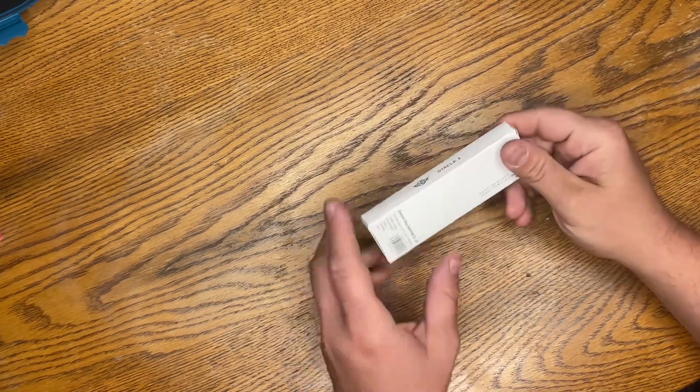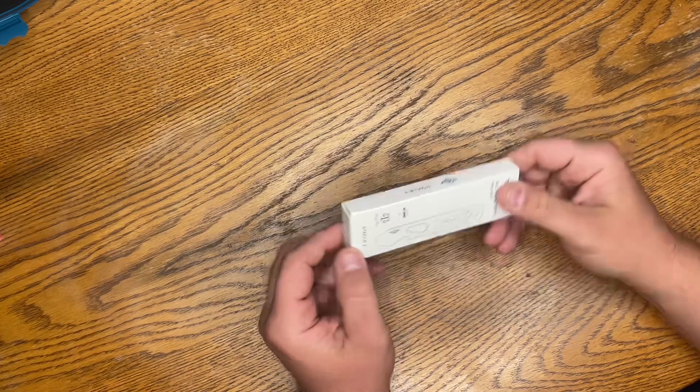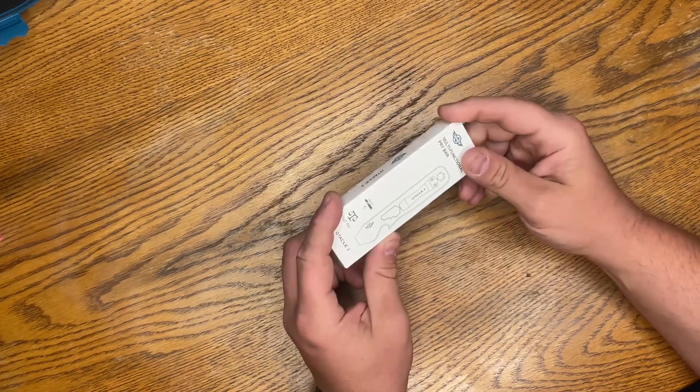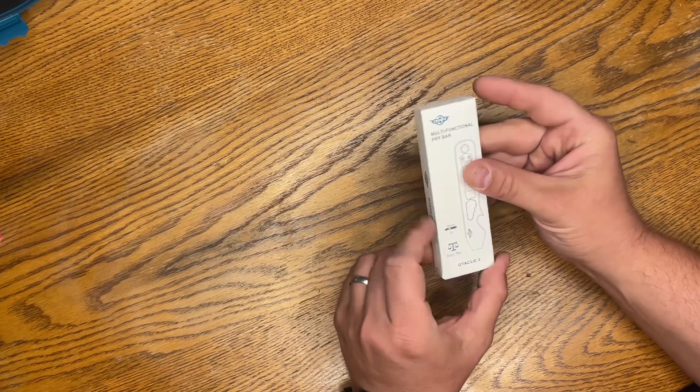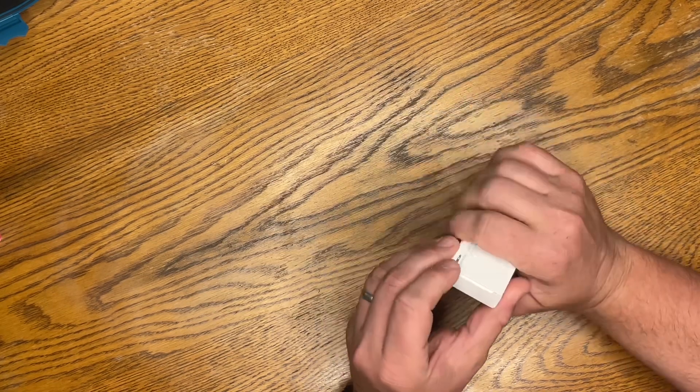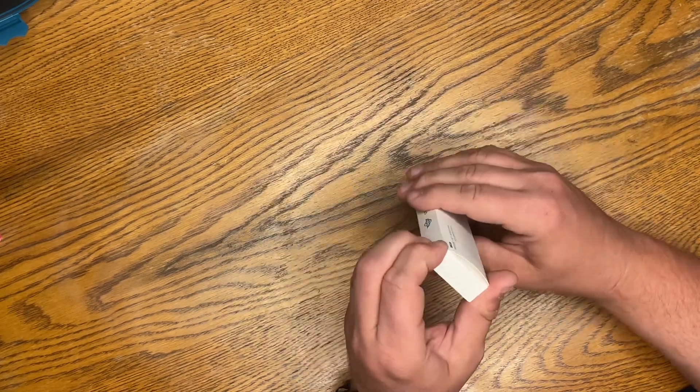Time for another little unboxing and review. This time we're going to be looking at this, I don't even know how to pronounce that. Oh, to call an Oticol 2, a multi-function pry bar. I've kind of been interested in pry bars but it hasn't really been something I've been too anxious to buy.